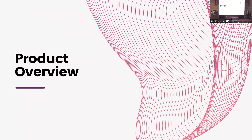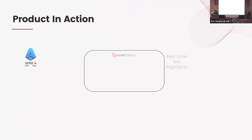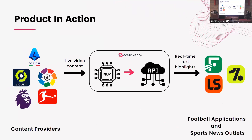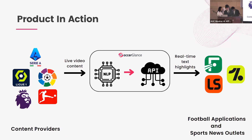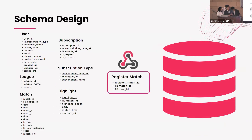Now let's move on to the product overview. We'll take a look at an abstract view of our product in action with all key stakeholders involved. On the left-hand side, we have the content providers who supply us with streamed real-time video content through a link. The link is validated and fed into our system. Using our LLM model of choice, we process the match in real-time and extract the text highlights in JSON format. These highlights are then provided to football applications and sports news outlets through our REST API in an efficient and seamless manner.